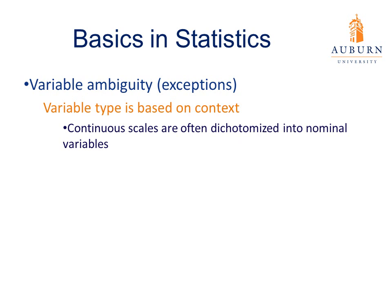This leads to variable ambiguity — exceptions when categorizing variable types. The type of variable depends largely on context, which we find by looking at the operational definition of how a variable is being used. For example, continuous scales are often dichotomized into nominal variables: we could take temperature and categorize anything above 70 degrees as warm (category 1) and anything below 70 degrees as cold (category 2). In doing so, we've taken a continuous interval variable and made it a nominal variable. We have to pay attention to context — it's not always clear cut.